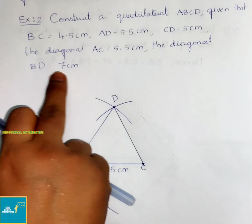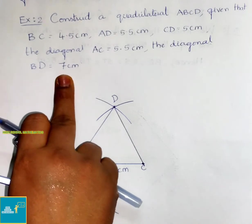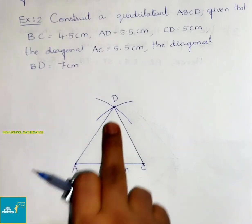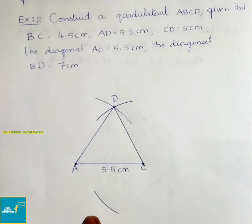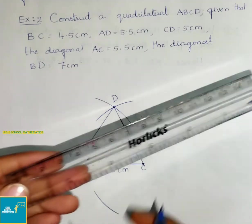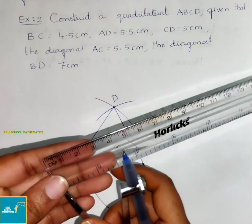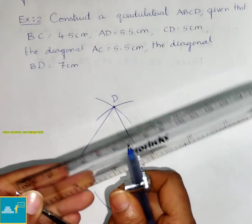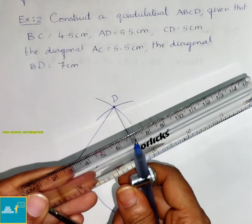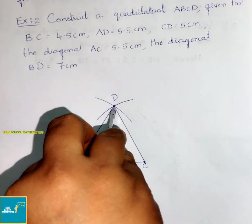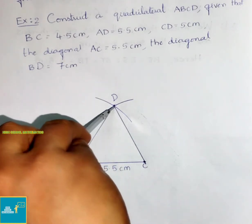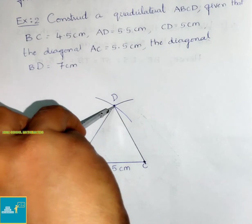They have given diagonal BD equals 7 cm. So with D as center, we shall draw an arc of 7 cm that cuts the previous arc at point B. Let us take 7 cm and draw the arc from D.